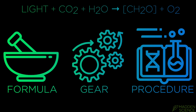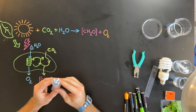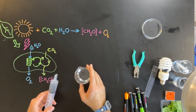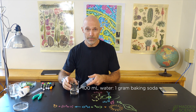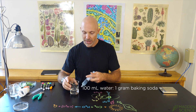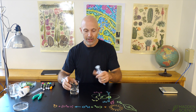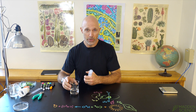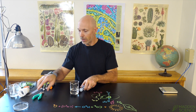Let's start with the examination of the formula, the gear, materials, and then the procedure. You're going to need a syringe and your baking soda solution — about 100 milliliters of water and one gram of baking soda. The baking soda provides the carbon source for the leaves when they undergo photosynthesis. You're also going to need a hole punch.